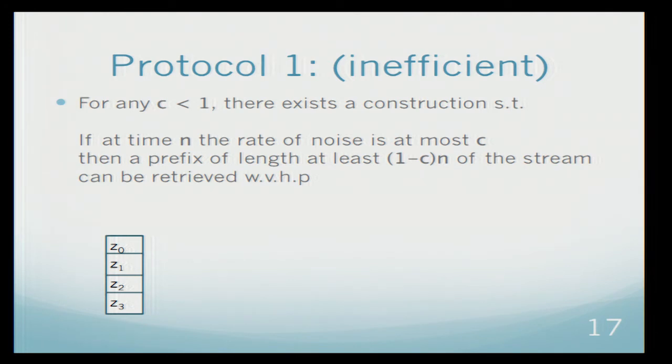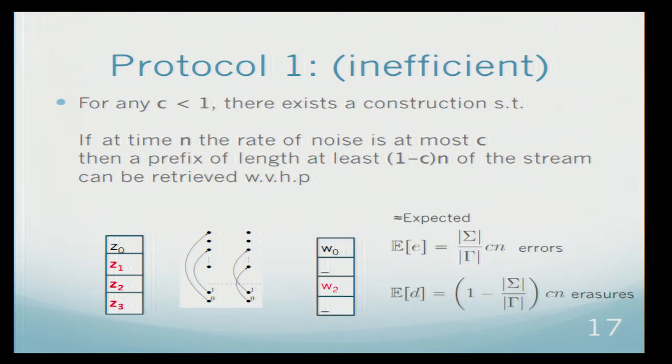Why is that? Let's assume that those were the symbols that Alice sent to Bob. And some of them got corrupted. They are marked in red. The first thing that Bob does will be to decode the blueberry code. After the blueberry code, some of the corrupted symbols will become erasures and some will become errors.